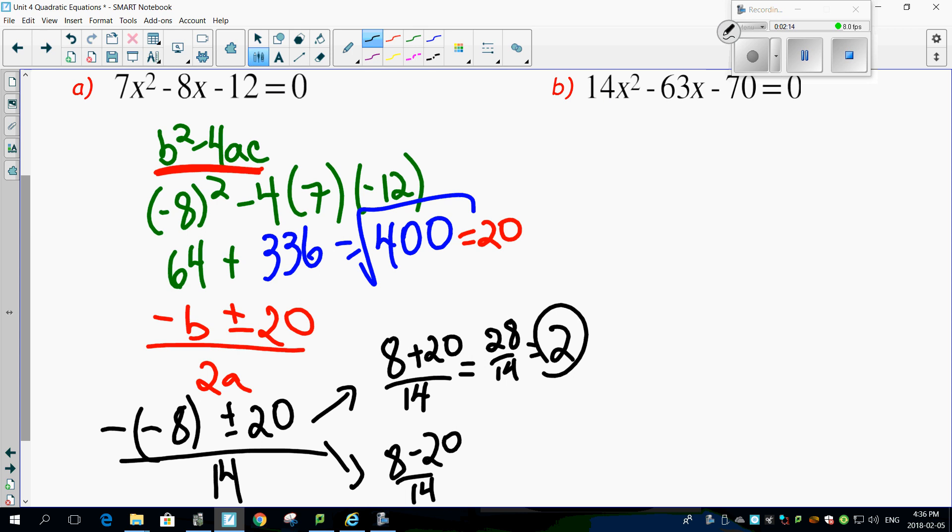This one, 8 minus 14, or sorry, 8 minus 20 is minus 12 over 14. Divisible by 2. This is going to be minus 6 over 7. There's my other root. Factored. Done.